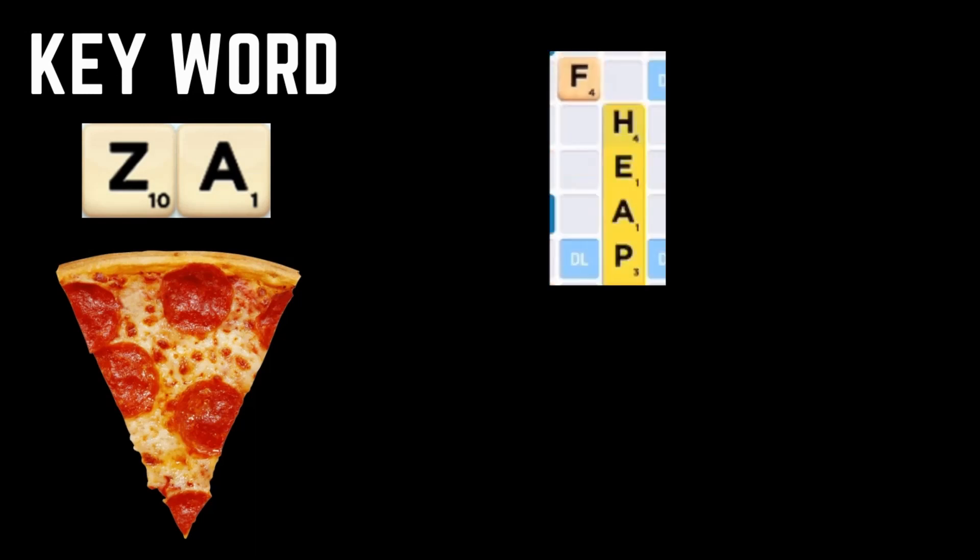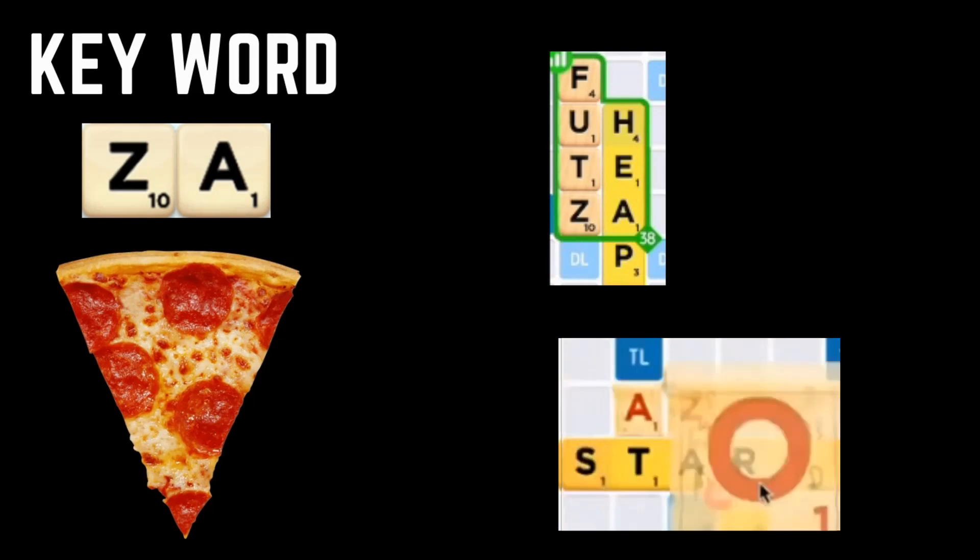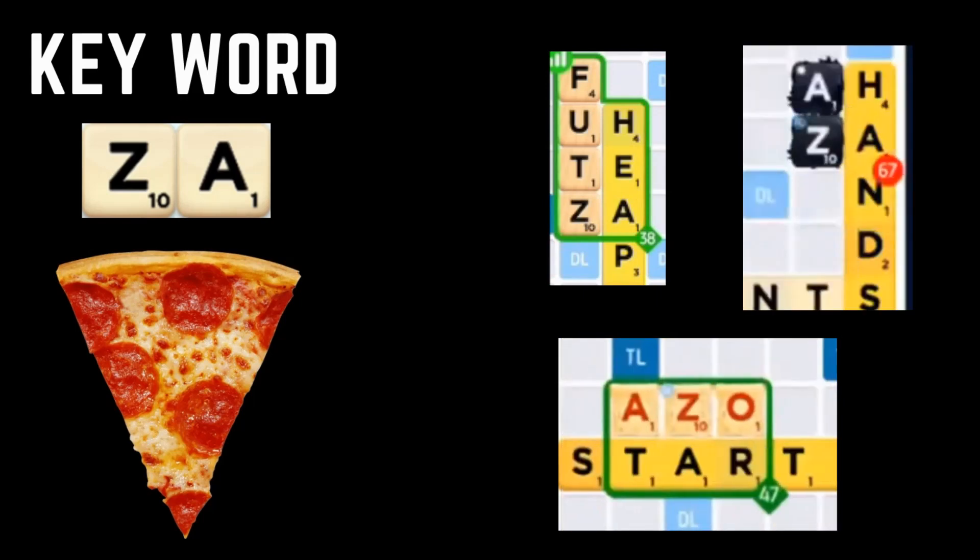Because with this word, you can get twenty points for your Z alone, without the aid of a bonus square. Forty points with a double letter score, and a whopping sixty points with a triple letter score.